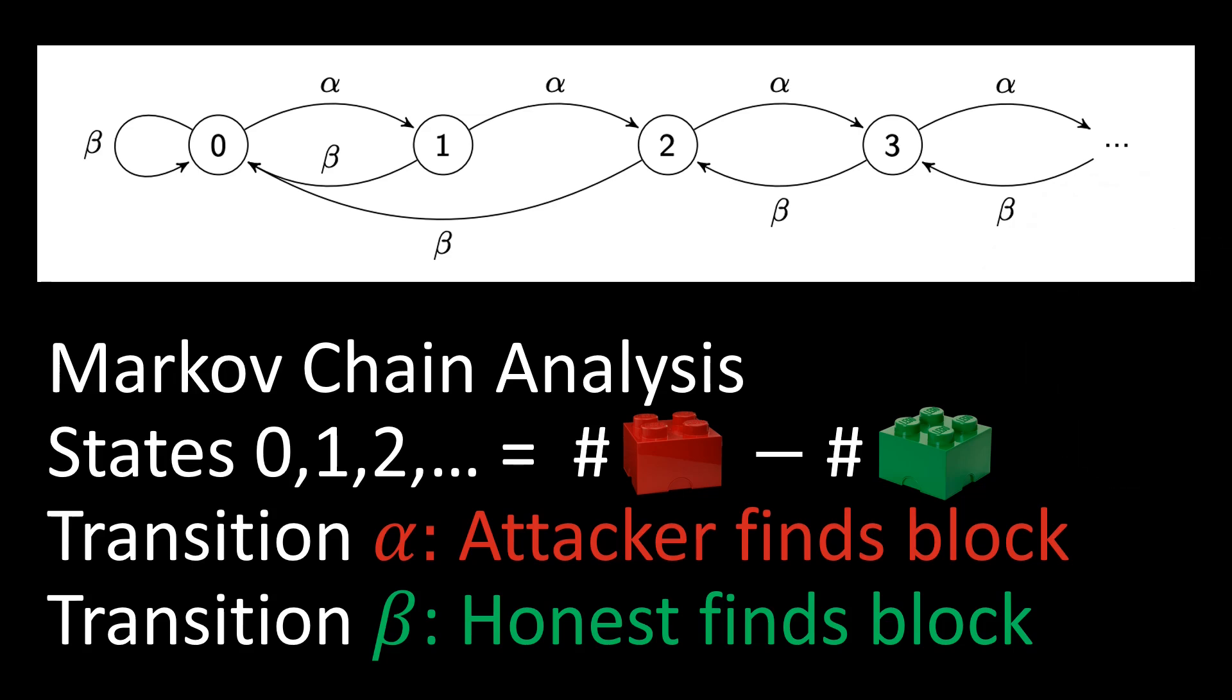Since we assume that the honest miners have more mining power, transition beta happens more often, so when we jump around in this Markov chain, we are usually in state 0, sometimes in state 1, and only rarely do we actually jump to higher states. We usually are in state 0, that is, the attacker has no secret blocks at all. Everybody agrees on the last public block in the blockchain.